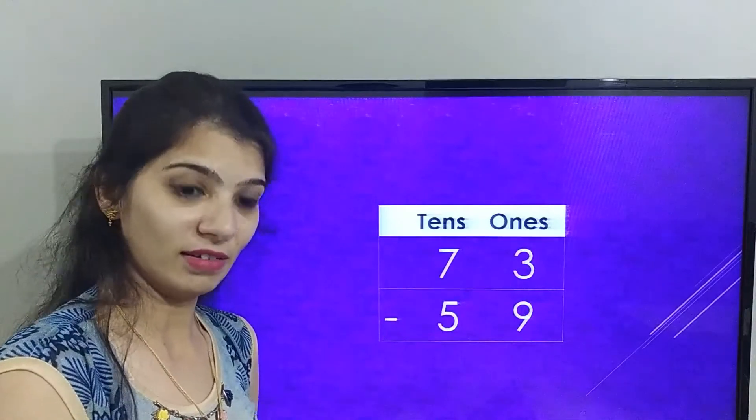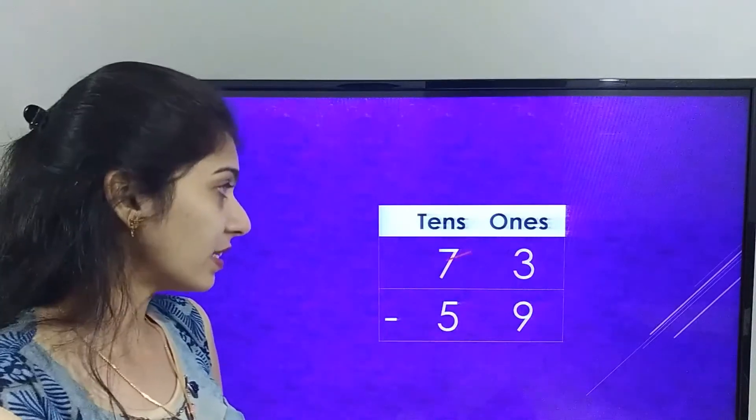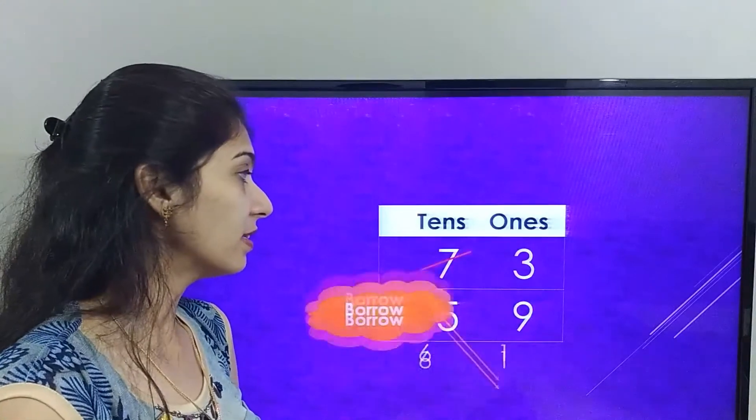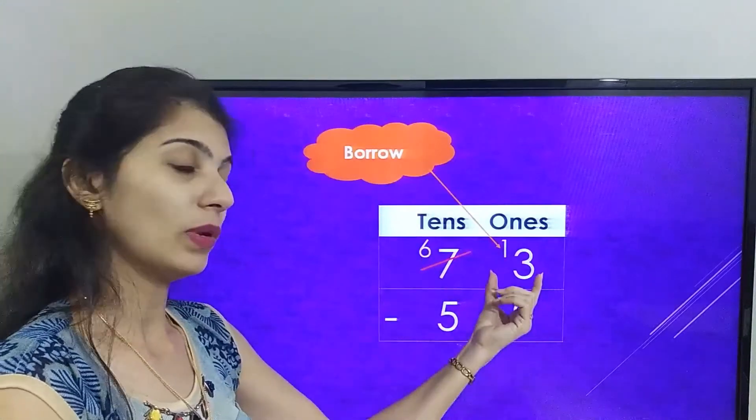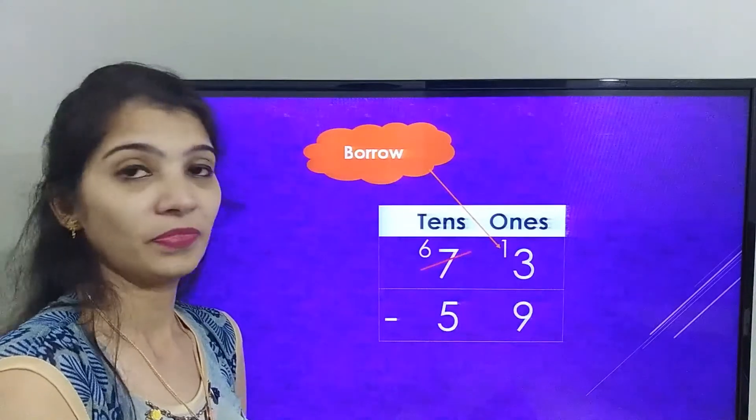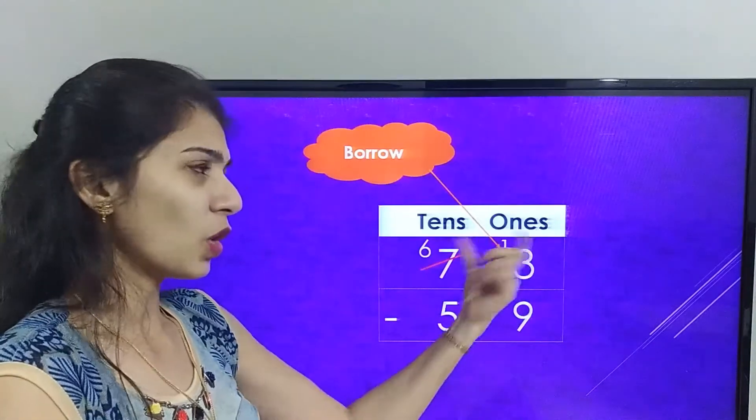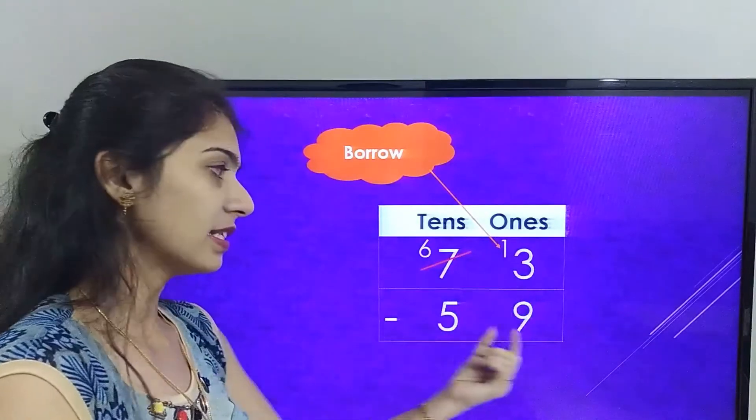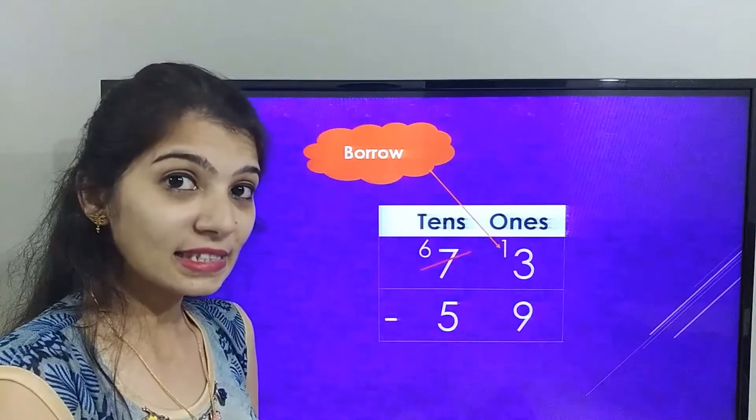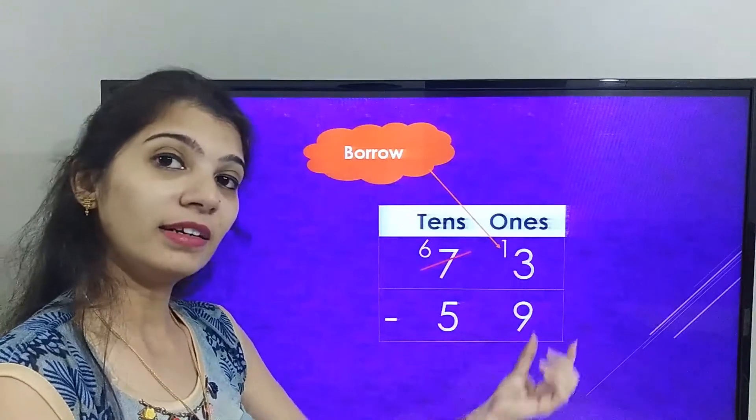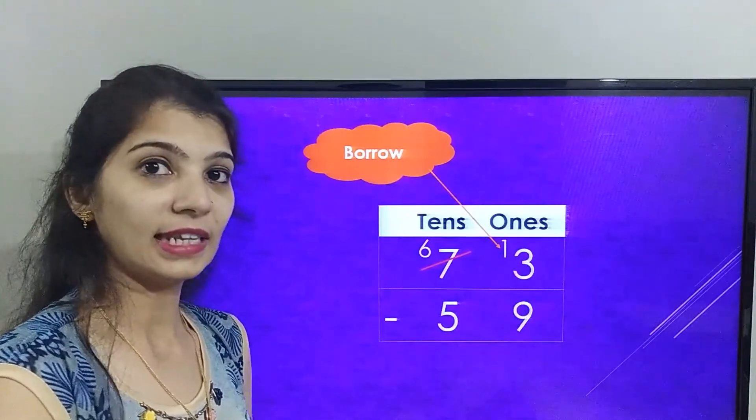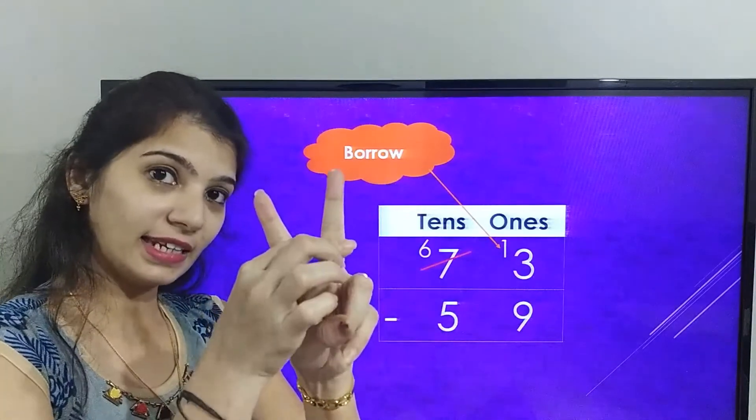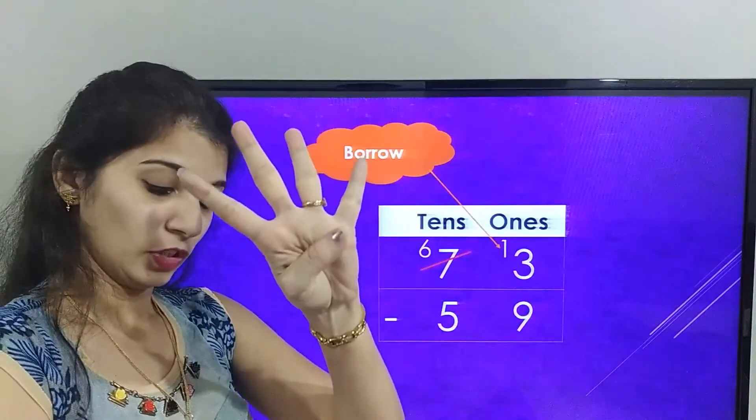So we'll cut 7 and make it 6, and we'll make 3 as 13. Now let's solve the ones place, that is 13 minus 9. Let's count after 9 till 13. That is 10, 11, 12, 13. So the answer in the ones place is 4.